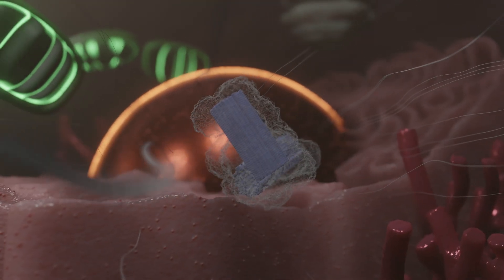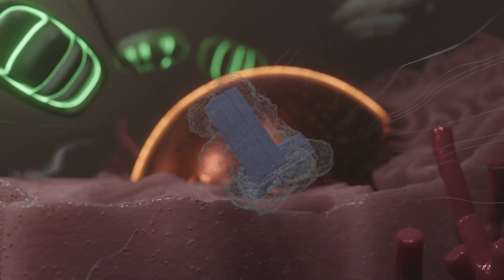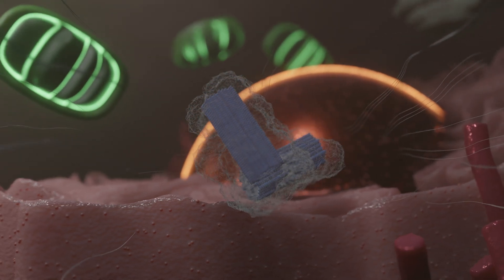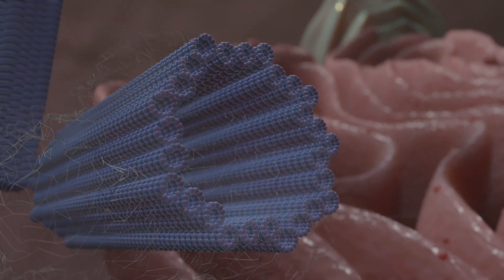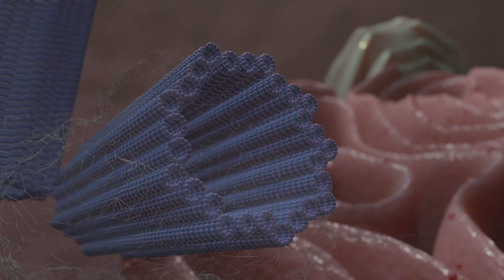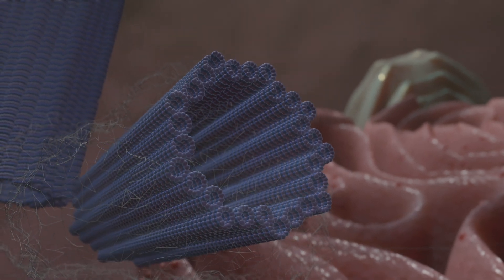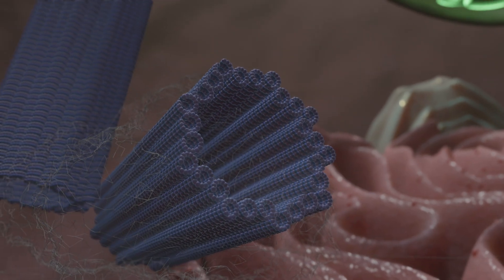There are two centrosomes near the cell nucleus. Each centrosome consists of two cylindrical centrioles that are arranged at right angles to each other. The centrosomes play a decisive role in cell division in particular.